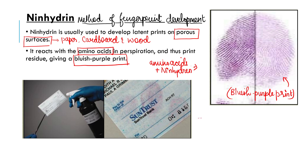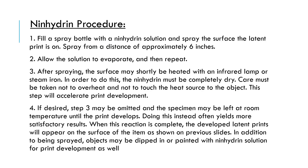So we can develop fingerprints on paper. Here you can see a fingerprint developed on a check. Papers, cardboards, and all porous surfaces are surfaces on which we can develop and enhance fingerprints.